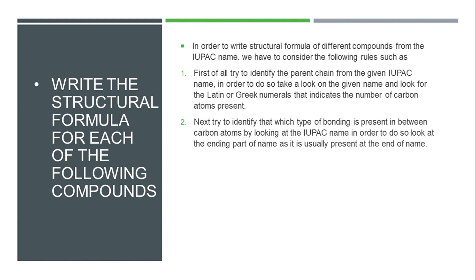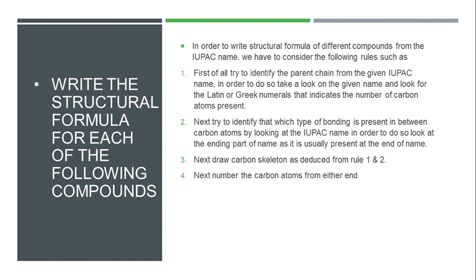According to rule 3, we draw the carbon skeleton on paper. After that, according to rule 4, we number the carbons from either end — from the right or from the left. It is not necessary to specify which end to start numbering from when going from name to structure (that constraint applies when going from structure to name). After numbering, according to rule 5, we attach the substituent on that respective carbon atom. The IUPAC name clearly indicates the position of each and every substituent.